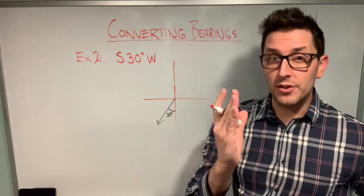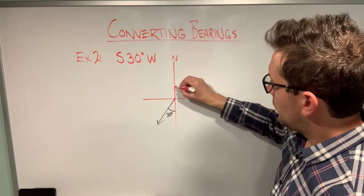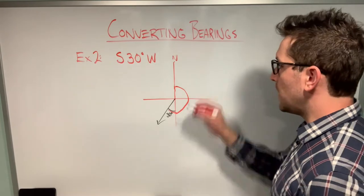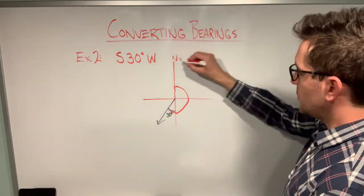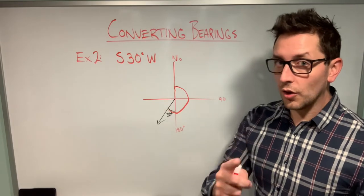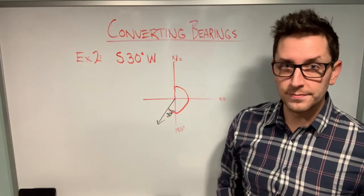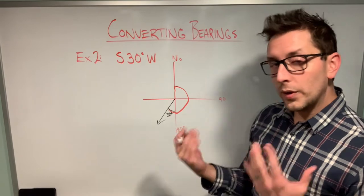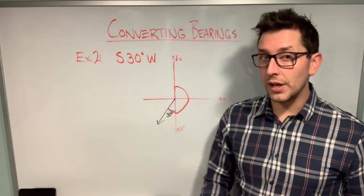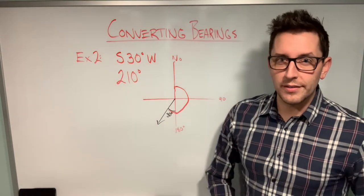To convert to true bearing form, remember that true bearings always give direction with respect to the northern axis. Starting at zero and rotating: 90 degrees to the east axis, another 90 degrees to 180 degrees at the south. Our vector is at the 180-degree southern axis plus an additional 30 degrees in the western direction. So we add 30 to 180 to get 210 degrees — the true bearing form of this vector is 210 degrees.